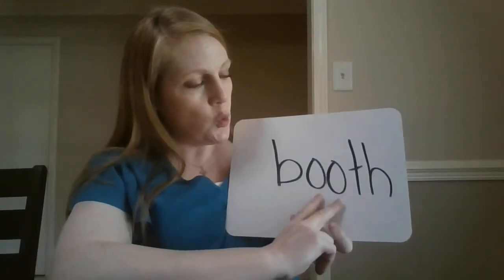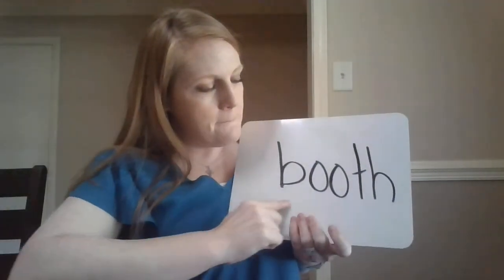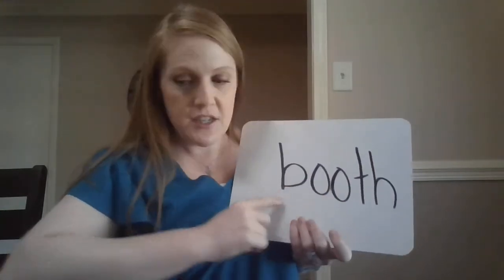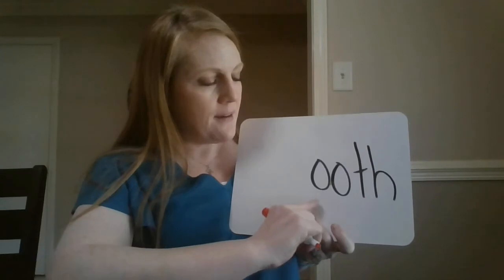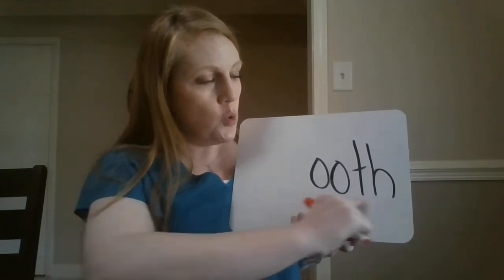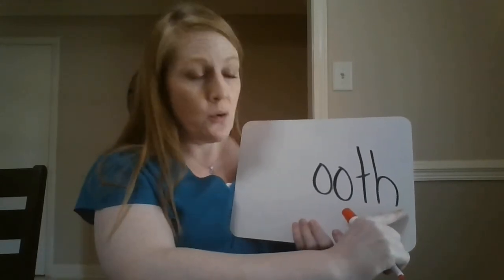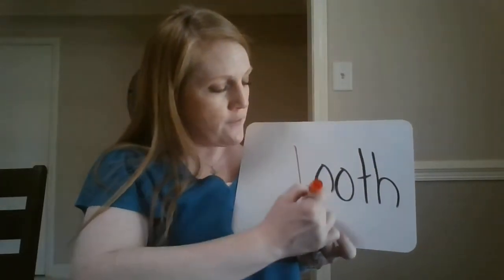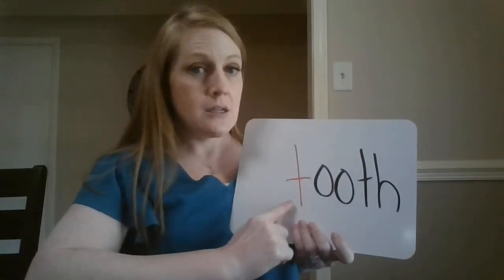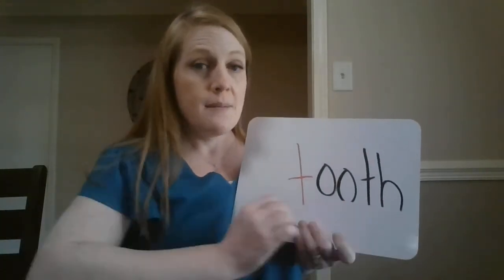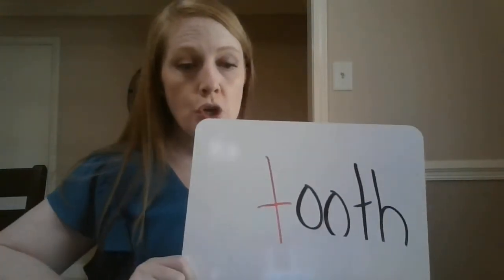I'm going to start with this word: B, OO, TH — booth. I'm going to change my first sound. I still have OOTH from the word booth, and I'm just going to add a new first sound right here. So now I have T, OOTH. My new word is tooth.